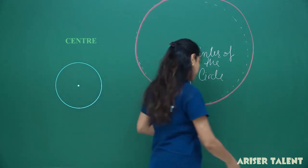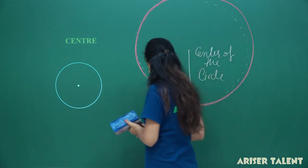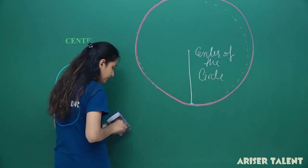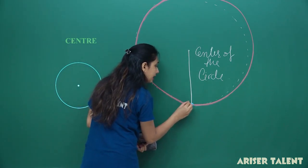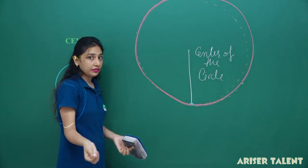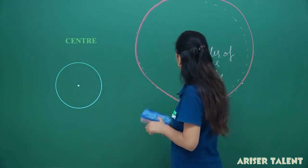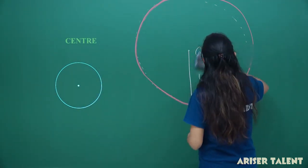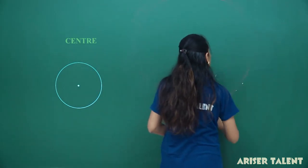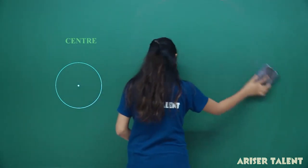How many points can I have on the circle? I can have a point here, a point here, here, here, and everywhere. So there are infinite number of points on the circle. This is about the center of our circle.